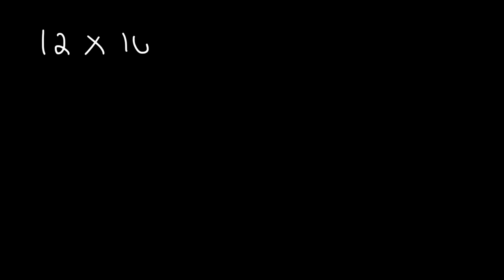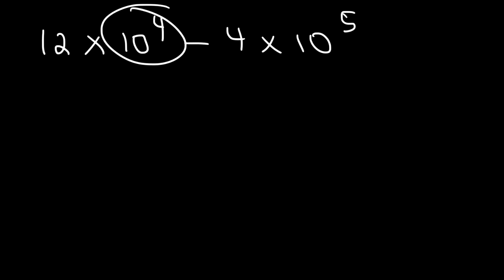Now, what do you do if the exponents are different? For example: 12 times 10 to the 4 minus 4 times 10 to the 5. We cannot subtract 12 and 4 directly because these exponents are different, so we need to convert one into the other.